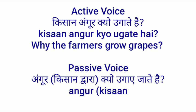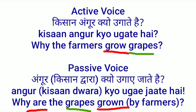'Why do the farmers grow grapes?' — meaning why do farmers grow grapes. Passive voice: 'Why are the grapes grown by farmers?' Grapes was the object so it becomes the subject. The third form of 'grow' is 'grown' — why are the grapes grown by farmers.